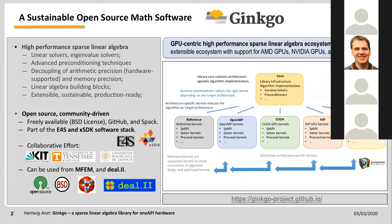Ginkgo is an open source math library — anyone can use it, contribute, or sell it. The focus is on high performance sparse linear solvers: think iterative solvers, preconditioners, and eigen solvers. The framework is very general, allowing other functionality to be deployed as needed. It is part of the E4S and XSDK ecosystem, which bundles high performance libraries used by application scientists, and is installed by default on major US computing facilities and increasingly on European supercomputing facilities.